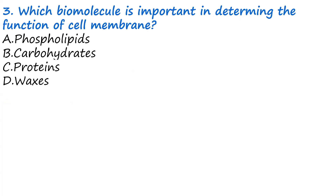Question three: Which biomolecule is important in determining the function of the cell membrane? A, phospholipids. B, carbohydrates. C, proteins. D, waxes. The answer is proteins. Proteins determine the functions of each component of the cell, so the functions of the cell membrane depend on the types of proteins found on the surface of the cell membrane.